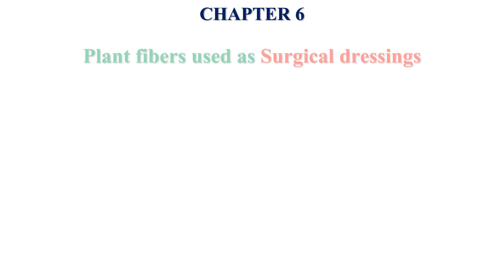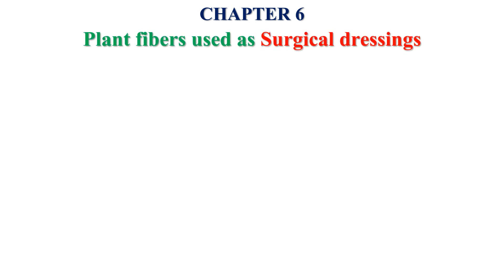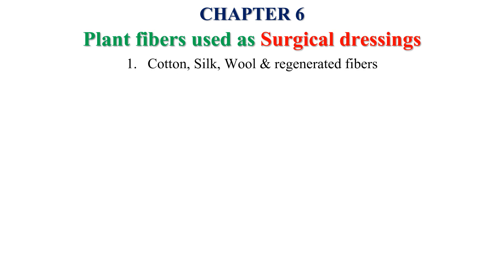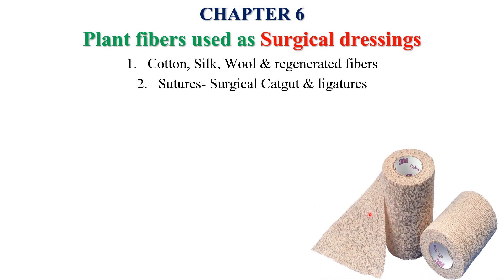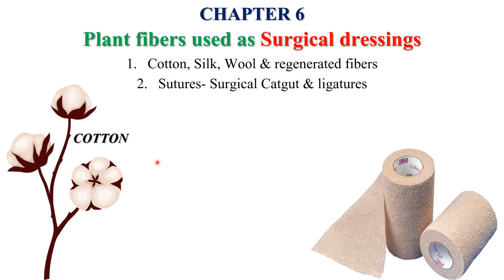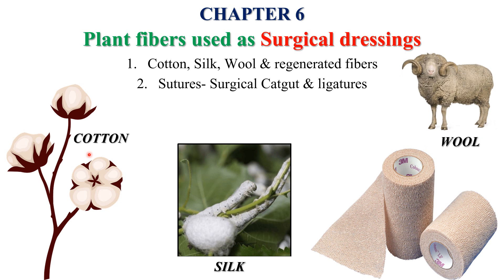Chapter six gives us knowledge about which plant fibers are used as surgical dressings. The fibers are obtained mainly from cotton, silk, wool, and regenerated fibers. We will also study sutures, surgical catgut, and ligatures. You will see the bandage used for surgical dressings. The plant fiber sources are cotton, silk, and wool.